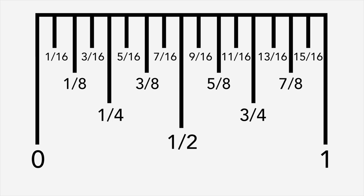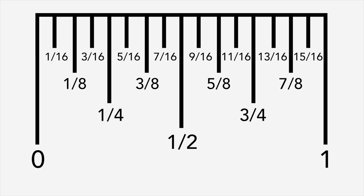The smallest lines represent one sixteenth of an inch. On this ruler, there are one sixteenth of an inch between each line.